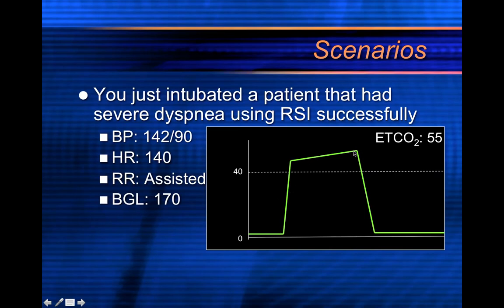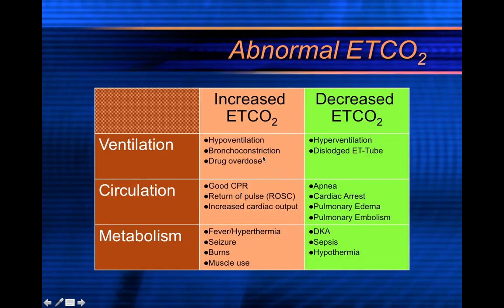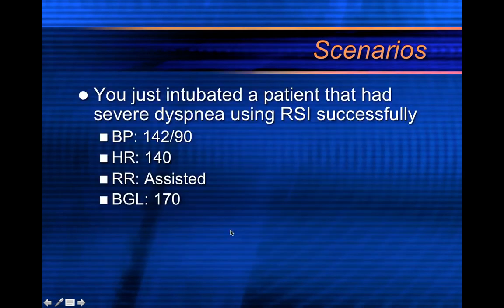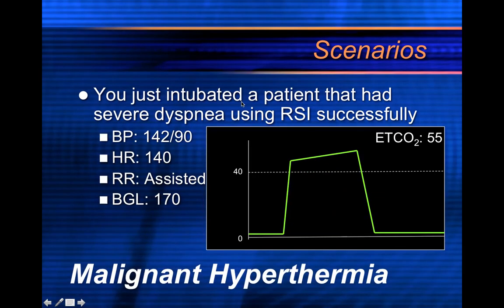What's causing it to be high? Looking at our list: it's not hypoventilation — we're ventilating for them at a good rate. No drug overdose from opiates. No bronchoconstriction — the waveform isn't shark-finned. Not a cardiac arrest. Could it be hyperthermia? In an RSI patient, especially using a depolarizing paralytic, patients with a history of malignant hyperthermia can develop a hyperthermic state and elevated CO2. You would take a temperature to confirm that diagnosis.